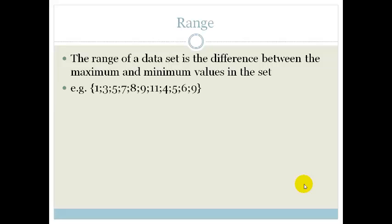So let's say for example we have a bunch of data: 1, 3, 5, 7, 8, 9, 11, 4, 5, 6 and 9. The range of data in the set is the difference between the maximum number and the minimum number. So the range is the difference between the max and min.